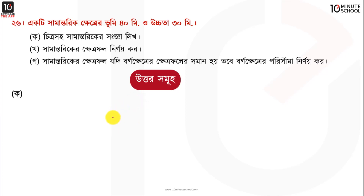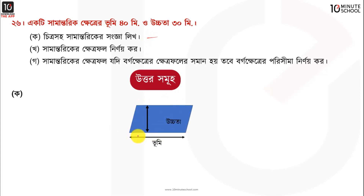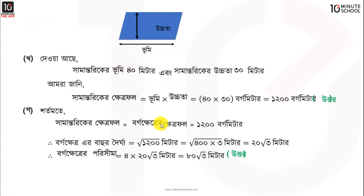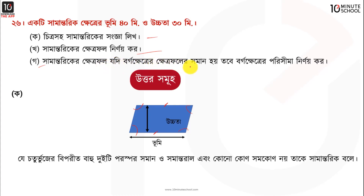সমিতার ও উচ্চতা ত্রিশ মিটার। চিত্রসহ সামান্তরিকে সংগা দিতে বলছে। তো এখানে দেখো এটি মনে গেলো সামান্তরিকে ছবি। যার ভূমি হচ্ছে এই নিচের রেখাটা এবং এই ভূমি থেকে উপর বাহু পর্যন্ত লম্বো ভূদূরত্ব হচ্ছে উচ্চতা। এখন সামান্তরিকে সংগা হচ্ছে যে চতুর্ভুজের বিপরীত বাহু দুটি পরস্পর সমান।